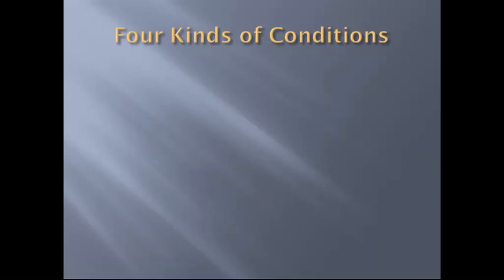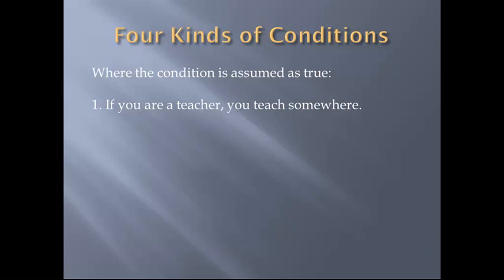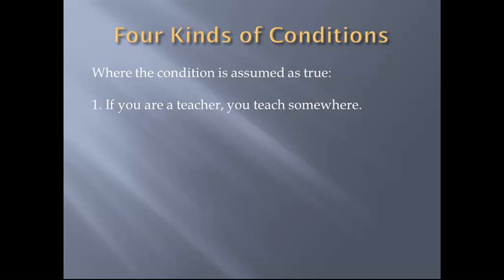There are four kinds of conditions: two kinds that use 'ei' for if, and two kinds that use 'ean' for if. The first class condition is, as we said, where the condition is assumed as true. For example: if you are a teacher, you teach somewhere — assuming you are a teacher, then you teach somewhere. It is 'ei' with an indicative verb in the if-part. The indicative is the mood of a verb that implies factuality of some kind.